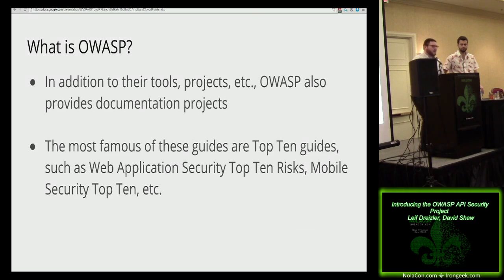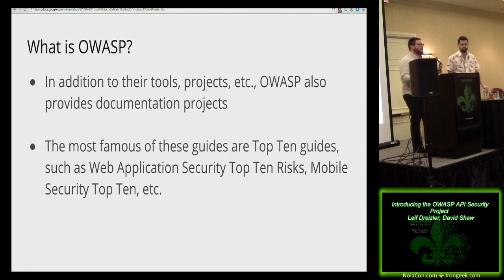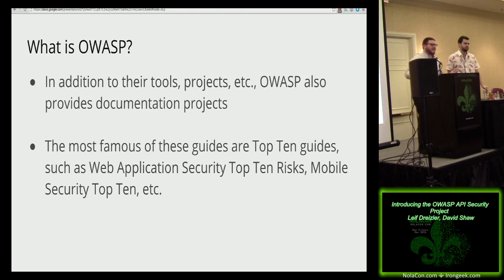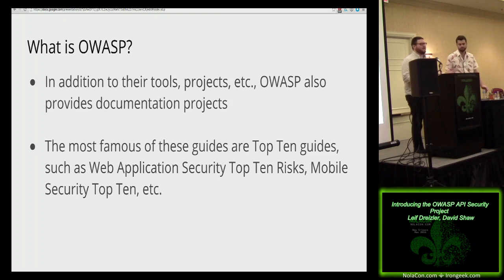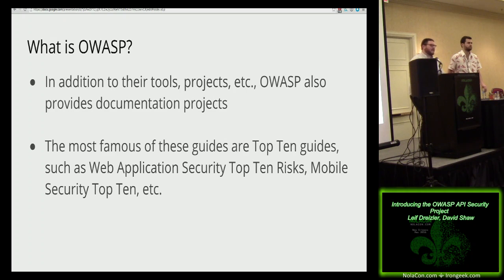In addition to their tools, projects, and conferences, OWASP also has documentation projects, and some of these are actually pretty famous. The top 10 guides are pretty much the go-to reference for web security vulnerabilities — a bunch of pen testing firms use the OWASP web application top 10 as security finding categories. It's very common, you can't really avoid it. They also have the mobile security top 10 and the Internet of Things top 10 security risks — those are sort of their flagship documents.